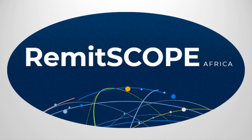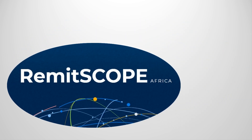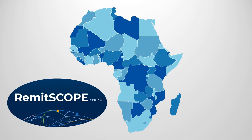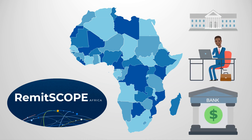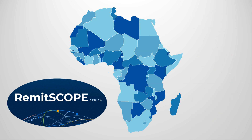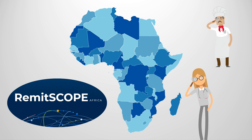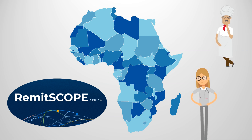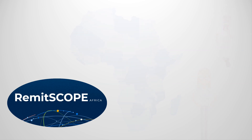RemitScope Africa is an online initiative that collects and analyzes remittances data on 54 African countries. The platform is geared towards policy makers, market analysts, transfer service providers, and actors that support diaspora engagement. However, it is easily accessible by anyone. Any individual needing to know about transfer costs, providers, and regulations for a specific African country can easily get their answers on RemitScope.